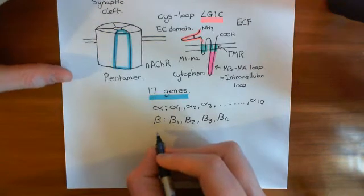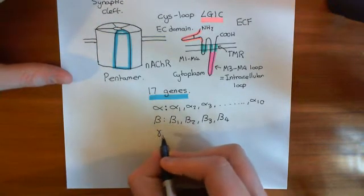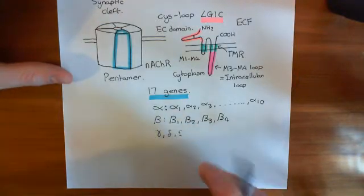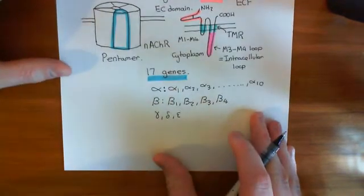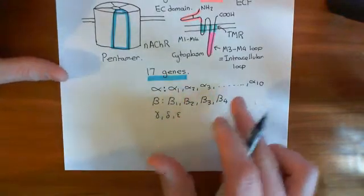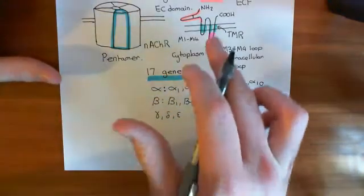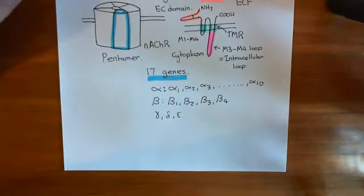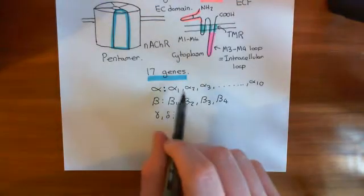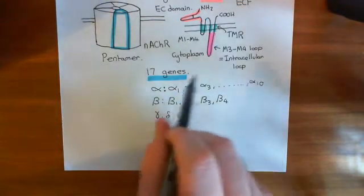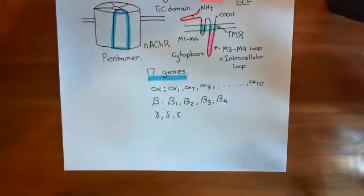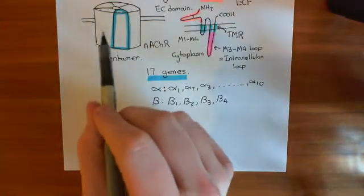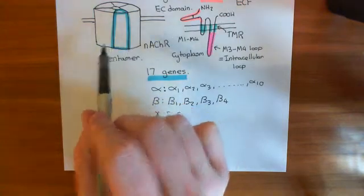Finally, we need three more genes. These aren't put into families; instead, they are just called the gamma, the delta, and the epsilon gene. So basically we have 17 different genes which code for 17 different nicotinic acetylcholine receptor subunits — this suddenly becomes a lot more complicated. All of the proteins coded by these genes are only a fifth of a nicotinic acetylcholine receptor, so they have to be pentamerized.